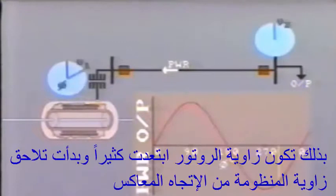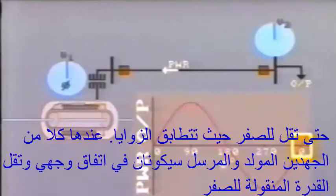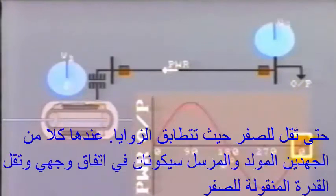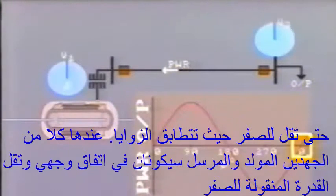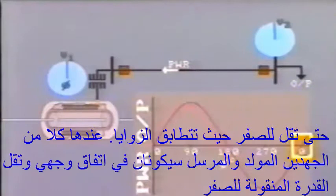The generator rotor has advanced so far that it's now coming around again and is beginning to catch up with the system. It then reduces to zero as the angles coincide. At this instance, the voltages at each end of the line are in phase and load transfer is zero.